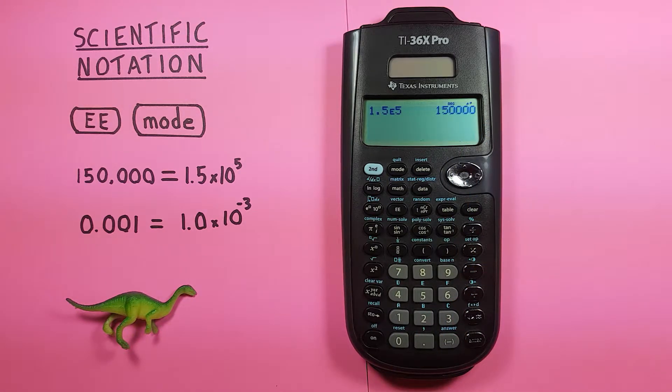You can also do this with small numbers. Let's say we had 0.001, which in scientific notation would be 1.0 times 10 to the power of negative 3.